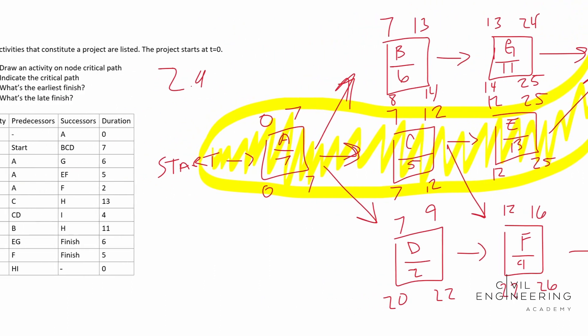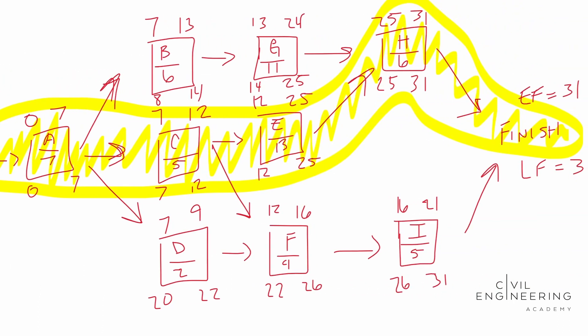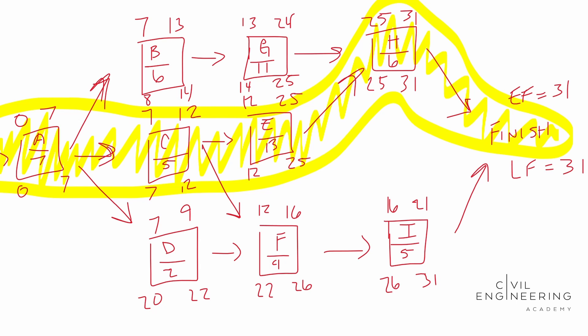And it wants us to know what's the earliest finish, the latest finish. We have it right there at 31. And then as far as float goes, here's a good lesson on float. Let's use F for example. If you're looking at F node F, the earliest that it can start is day 12. The latest it can start, day 22. So it has about a 10 day gap before it has to get started before it delays the project. That's going to be your float for this problem.